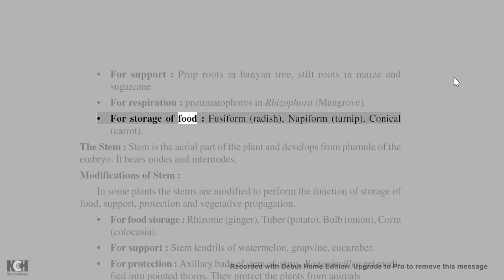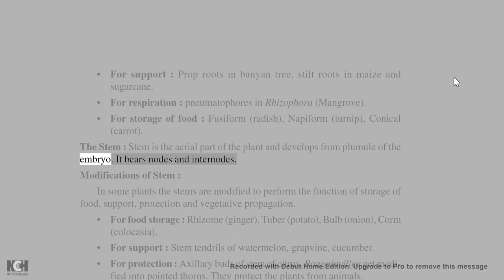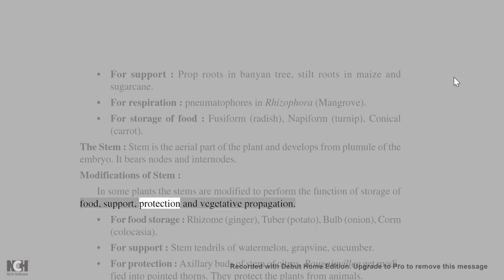For storage of food: fusiform (radish), napiform (turnip), conical (carrot). The stem is the aerial part of the plant and develops from the plumule of the embryo. It bears nodes and internodes. Modifications of stem: in some plants the stems are modified to perform the functions of storage of food, support, protection, and vegetative propagation.